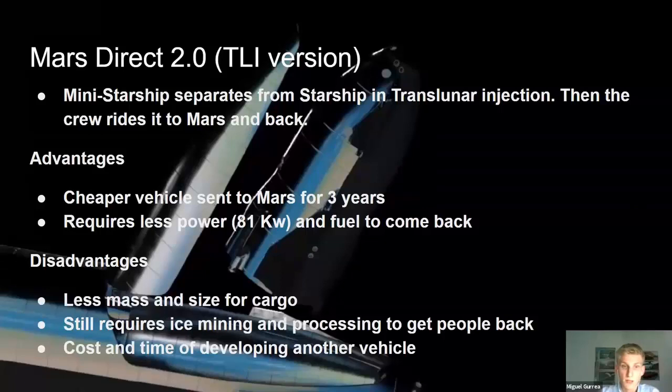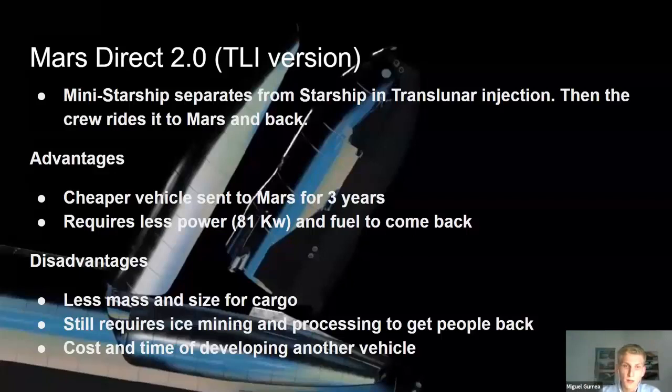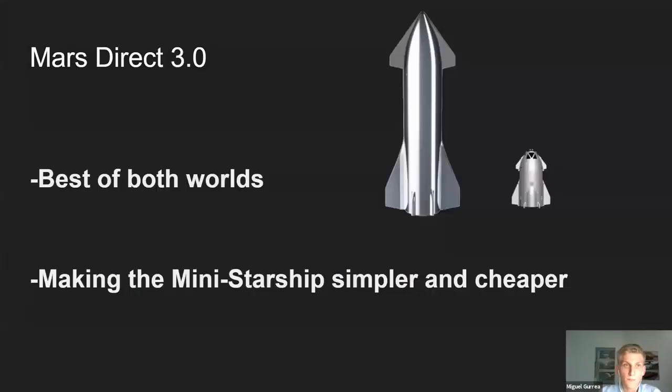Mars Direct 2.0 also comes with disadvantages: less mass and size for cargo, it still requires ice mining and processing to get people back, and there's the cost and time of developing another vehicle. So even though it requires less power, you can also take fewer solar panels. Launching from TLI means you can take more solar panels per amount of power needed, but it's still a problem.